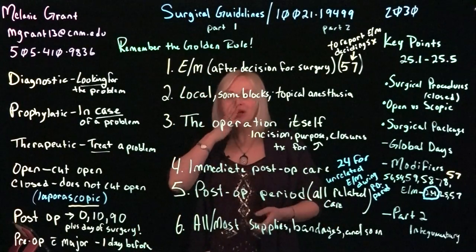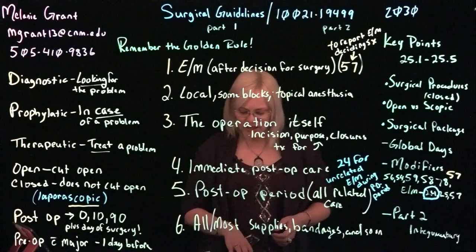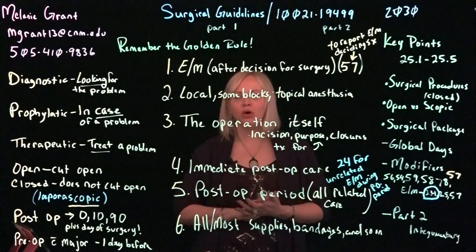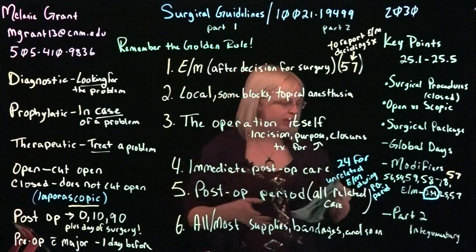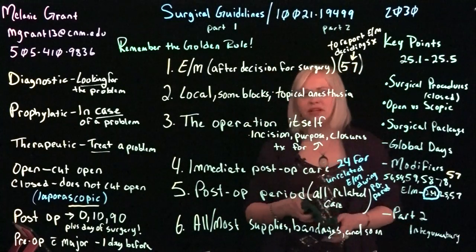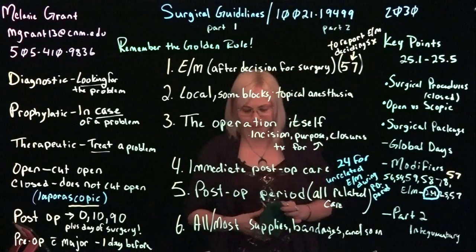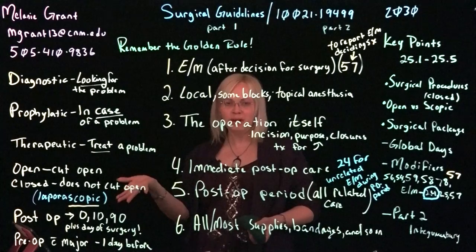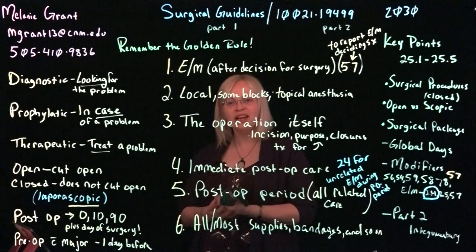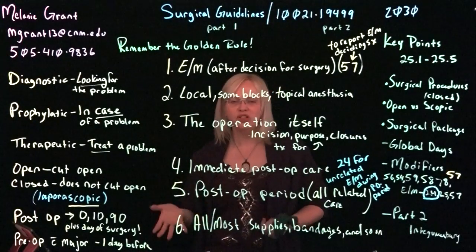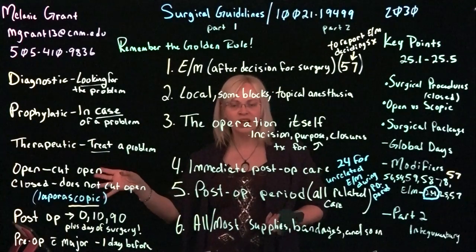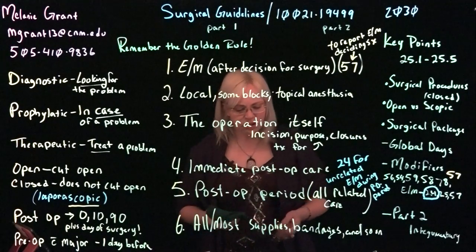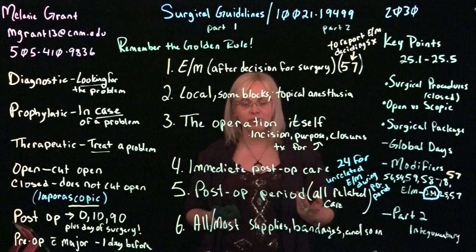The difference between a staged procedure and an unplanned surgery is modifier 78. Modifier 78 applies when the patient has been sent home with a regular treatment plan but ends up having a complication requiring additional surgery. For example, if a colectomy patient had the colon put back together right away but it started leaking, requiring a colostomy — that would be an unplanned return trip to the OR, resulting in modifier 78 on the second procedure.